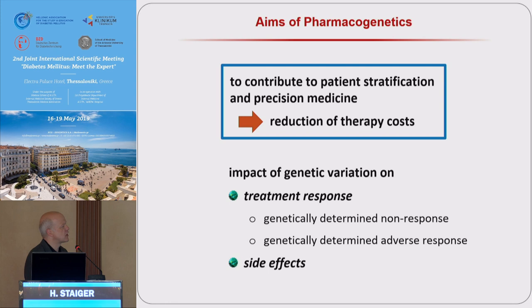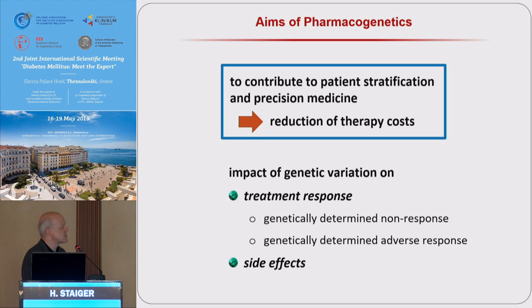The aim of pharmacogenetics is to identify or characterize the impact of genetic variation on treatment response. Especially, we want to identify genetically determined non-response and genetically determined adverse response to a drug, and we also want to study the impact of genetic variation on side effects. I will shed some light on GLP-1 receptor agonists, DPP-4 inhibitors, SGLT-2 inhibitors, and of course on metformin in my talk.